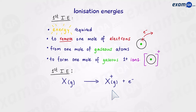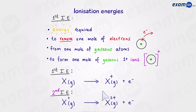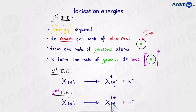Sometimes they could ask you to write down the second ionization energy and the third, etc. For the second, we're simply going to go up one more level. We're going to start with a +1 ion and remove another electron to form a 2+ ion. And for the third ionization energy, it's going to be from 2+ to 3+, and so on.